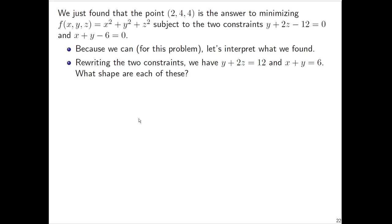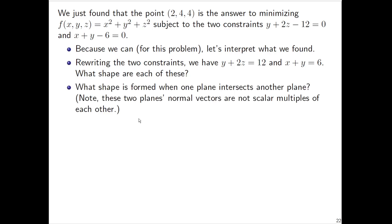Each of those are planes, right? You have a plane of normal vector (0,1,2) and a plane of normal vector (1,1,0) in three-dimensional space. Now, what happens when one plane intersects another plane? By the way, these planes aren't parallel - we just mentioned what the normal vectors are. What happens when two non-parallel planes in three-dimensional space intersect each other? What shape do you get?